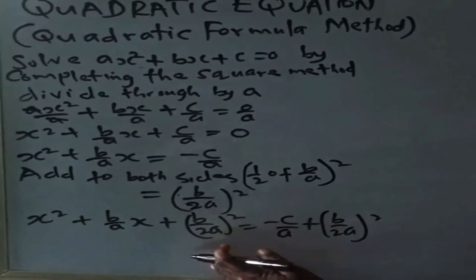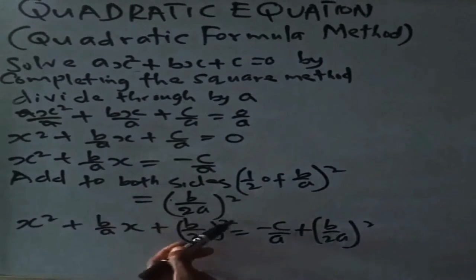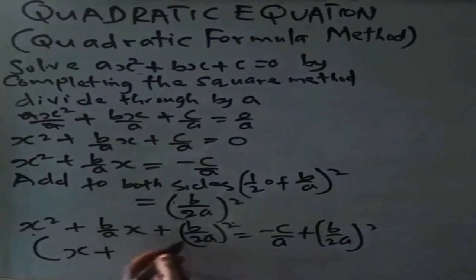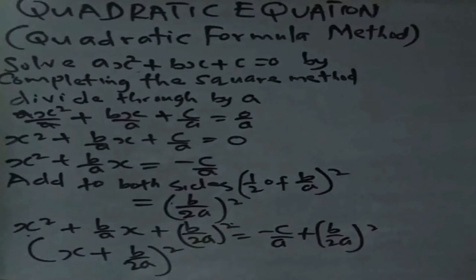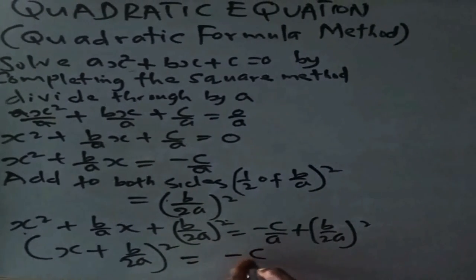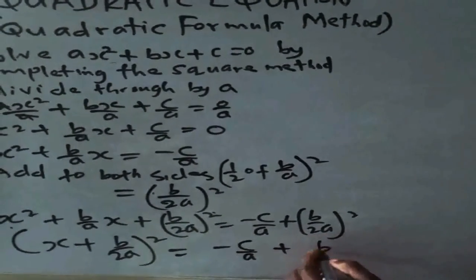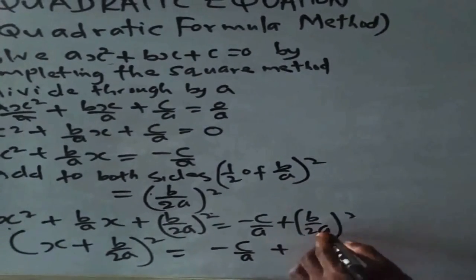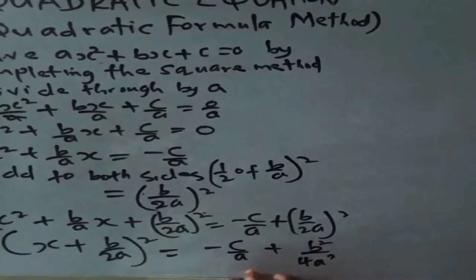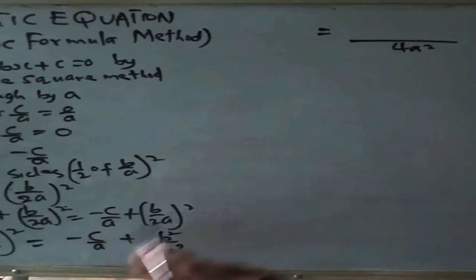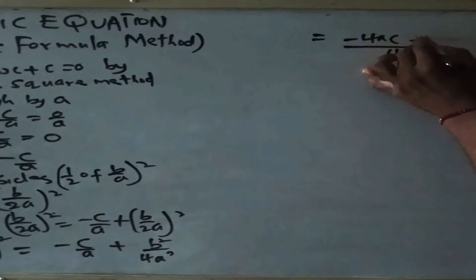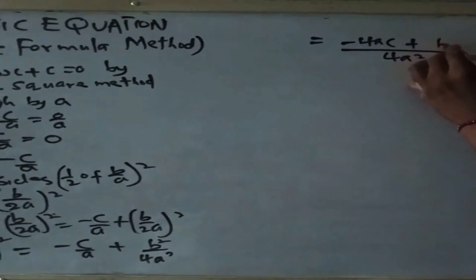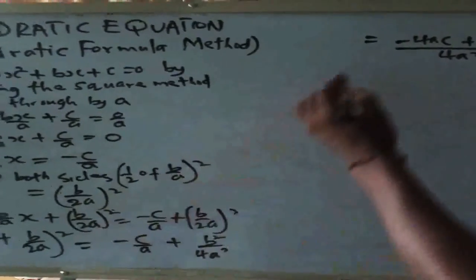What we have done is completed a square by making this expression a perfect square. So we pick (x plus b over 2a) all squared. When you expand this twice you get this classic expression — it's a perfect square. So we have minus c over a plus b squared over 4a squared. We find the LCM, which is 4a squared, giving minus 4ac plus b squared over 4a squared. To eliminate the square, take the square root of both sides.